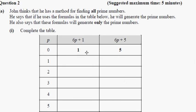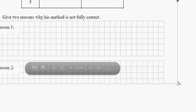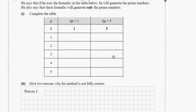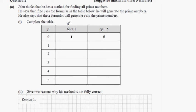John thinks that he has a method for finding all prime numbers. He says that he uses the formulas in the table below to generate the prime numbers. He also says these formulas will only generate prime numbers. Complete the table. The first formula is 6p + 1 and the second is 6p + 5.